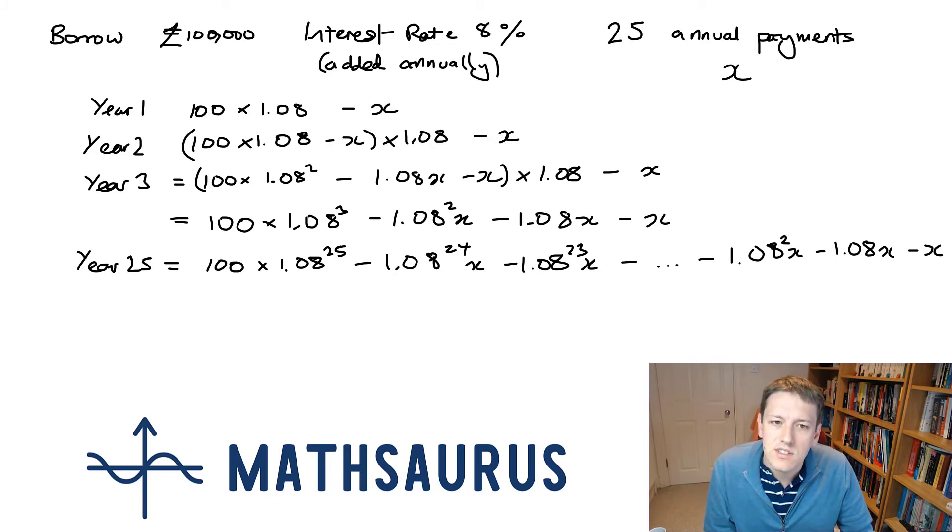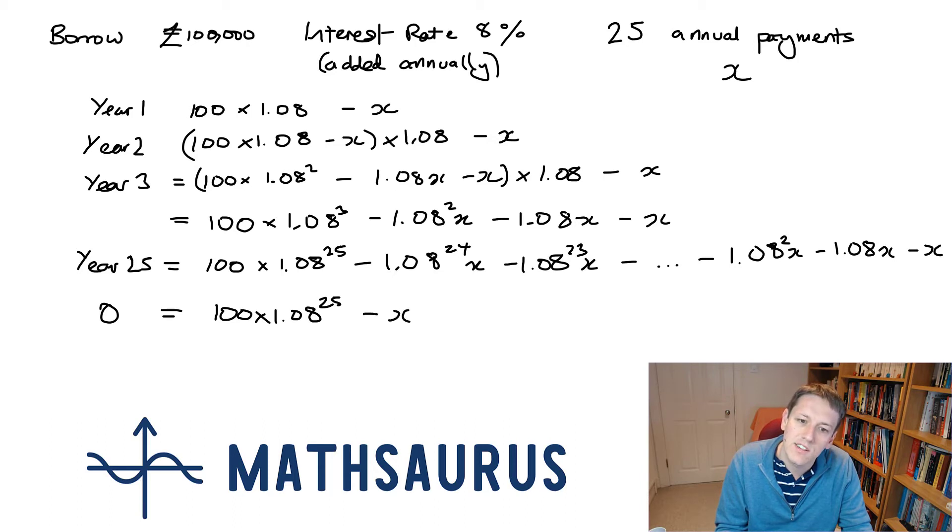And so the mortgage problem comes down to saying, I want the total amount outstanding at the end of year 25 to be equal to 0. So I want to solve for x, 0 equals 100 times 1.08 to the 25. And now you notice all the other terms have an x in them and they're all minus. So let's factorize that out.